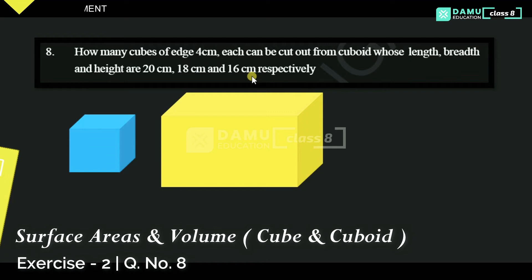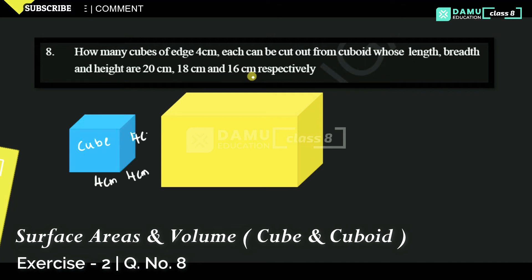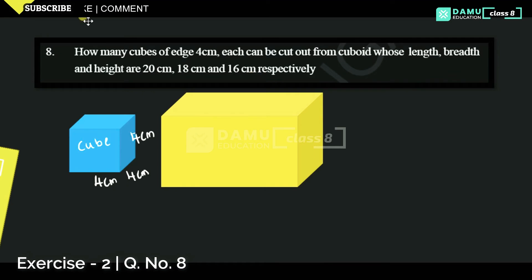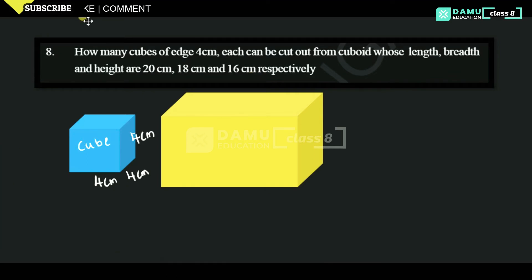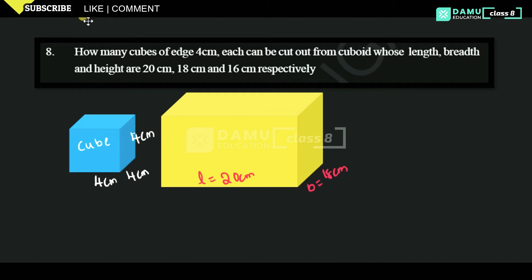So here, let us take a cube. In this cube, what is the edge? 4 cm, then 4 cm, then 4 cm. Then the cuboid — the given length will be equal to 20 cm, breadth will be equal to 18 cm, and height will be equal to 16 cm.